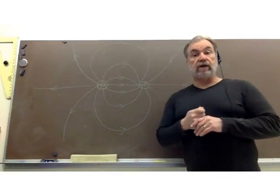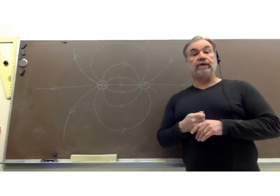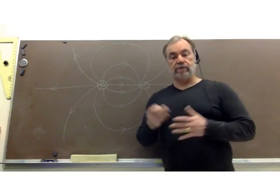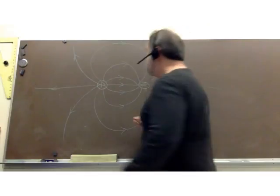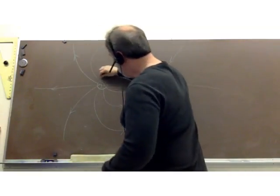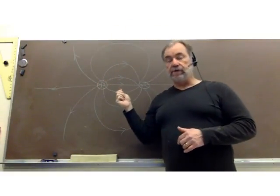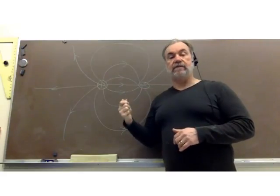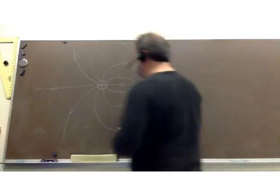Always draw your lines of equal potential so that they are everywhere perpendicular to the electric field lines. There's a little bit more to it than that, and I'll talk about that as we go, but that's the essential rule. I'm simply going to draw the equipotential lines so they're always perpendicular to the electric field vectors.